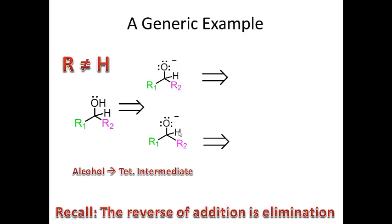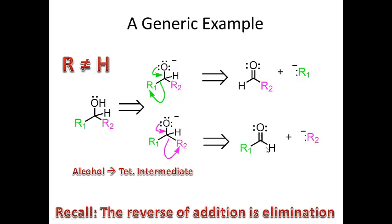From the intermediate I eliminate. You can see the arrows here: if I eliminate R1 with a pair of electrons, I reform the pi bond between oxygen and carbon to give an aldehyde. If I eliminate R2, I reform the pi bond and kick off R2 with a pair of electrons, giving an aldehyde where R1 is still attached. Both of these answers are correct — it just depends on which elimination pathway you choose.